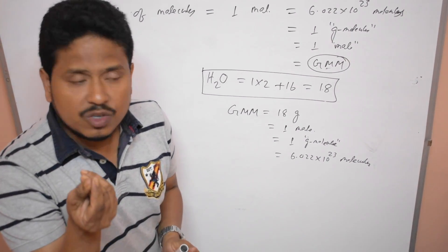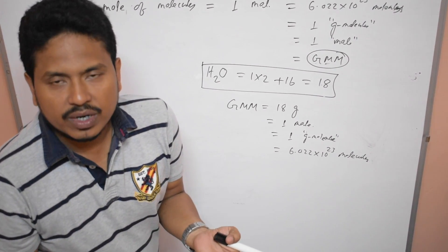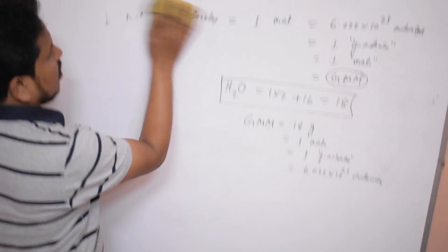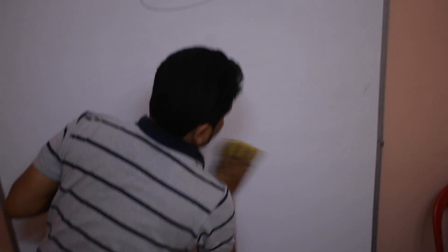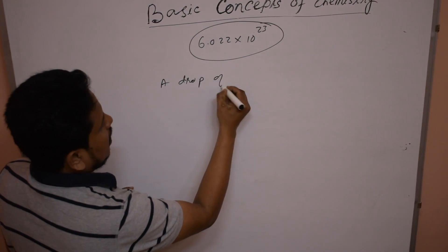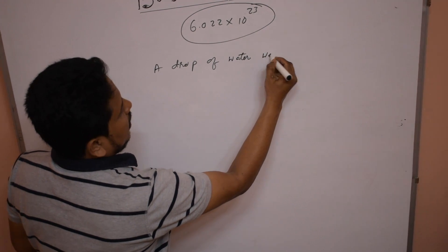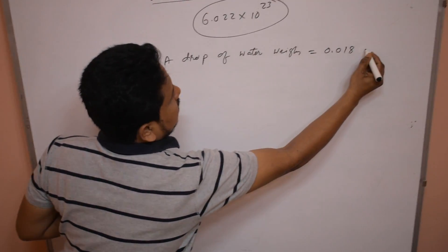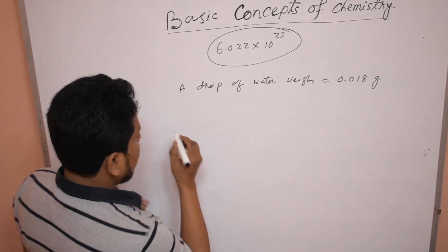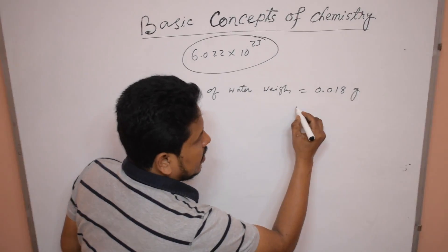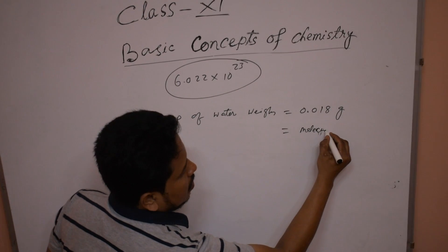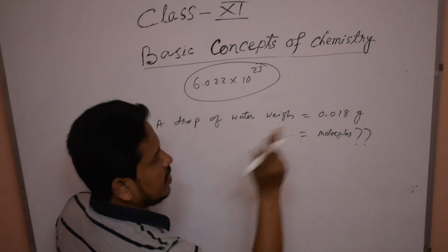By this concept, you can measure a drop of water. Let a drop of water — you can measure what is the weight of that drop of water with the help of a measuring balance. Let one drop of water weigh 0.018 gram. We are going to calculate how many molecules are present in that drop of water.